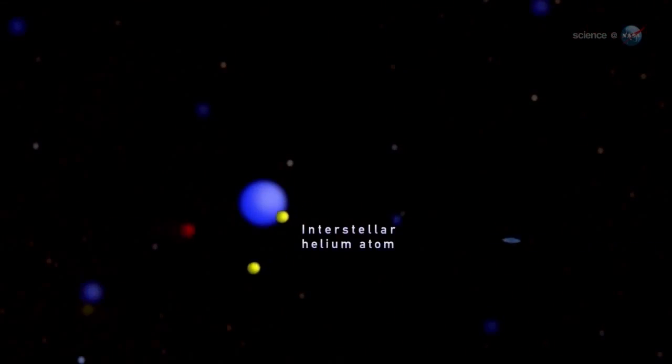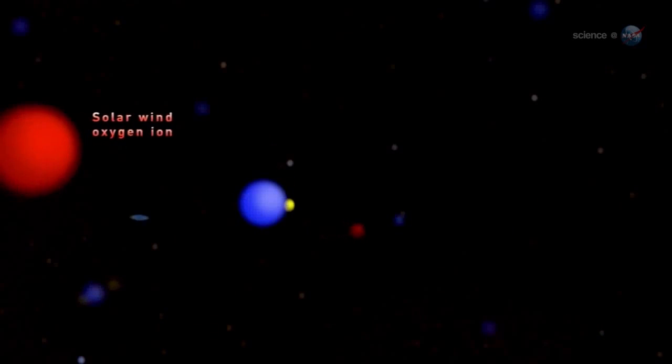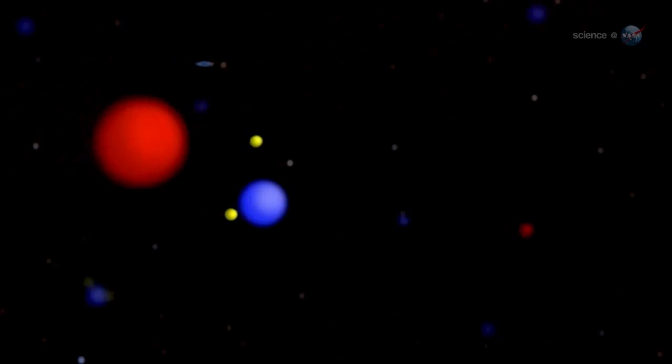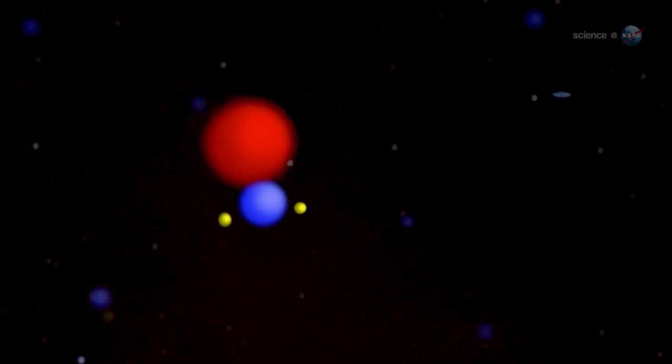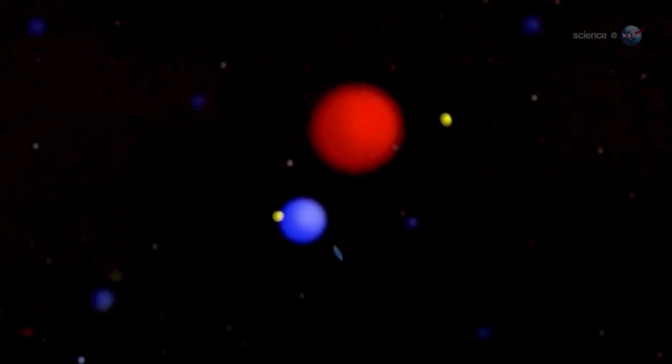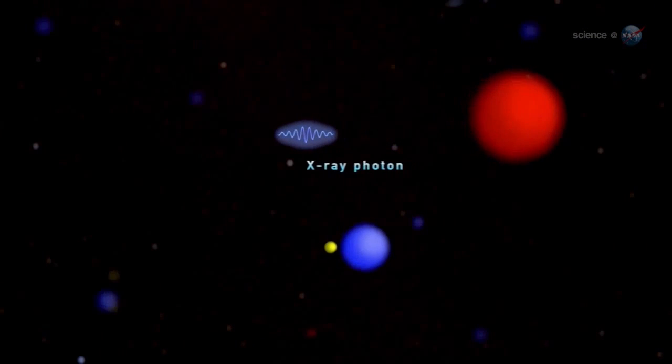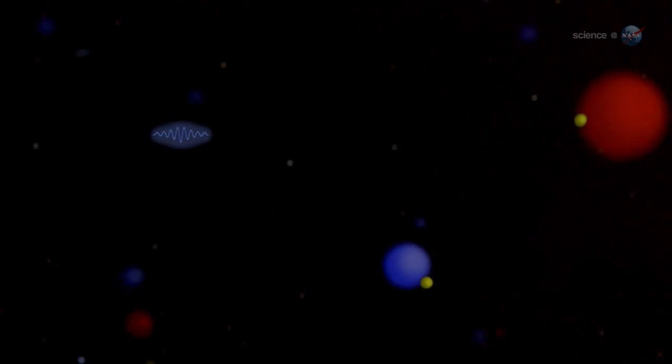Basically, it happens when the electrically charged solar wind comes into contact with a neutral gas. The solar wind can steal electrons from the neutral gas, resulting in an X-ray glow that looks a lot like the glow from an old supernova.